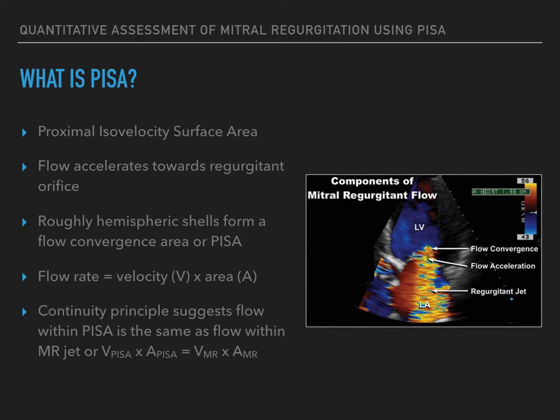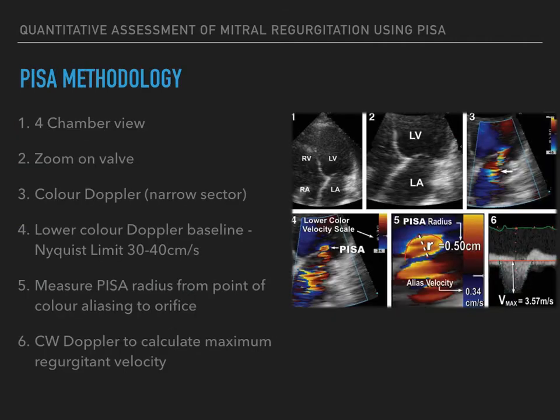Knowing this enables us to conclude that flow within the PISA is the same as flow at any point within the regurgitant jet, including at the regurgitant orifice. In simple terms, mitral regurgitation occurs because of the defective coaptation of the leaflets, and for the most part, the larger the defect, the more severe the regurgitation. The size of this defect is known as the effective regurgitant orifice area.